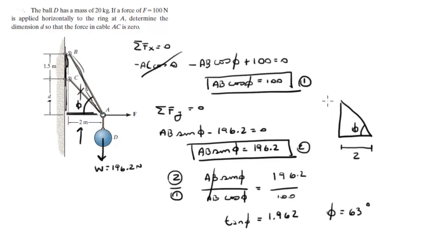And you know that this is, let's call it H. So you know that tangent of phi, which we have, is equal to opposite over adjacent. So that height is equal to 2 tangent of phi. Phi we got at 63.